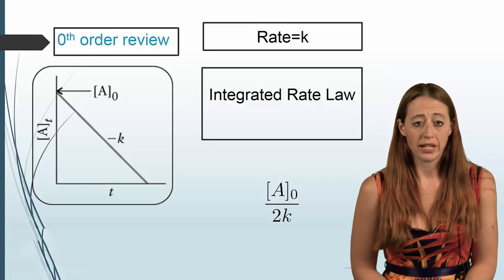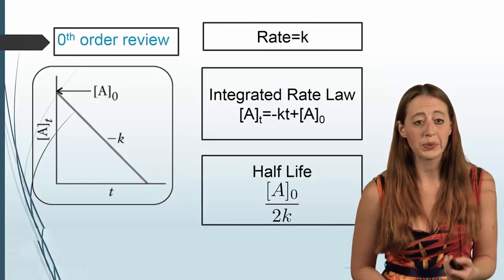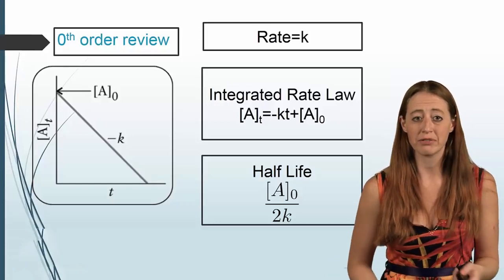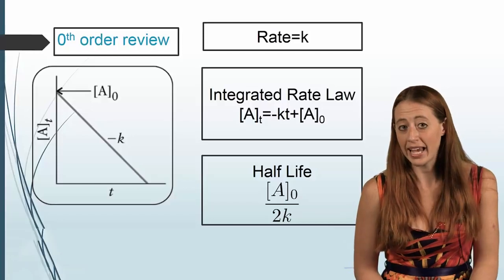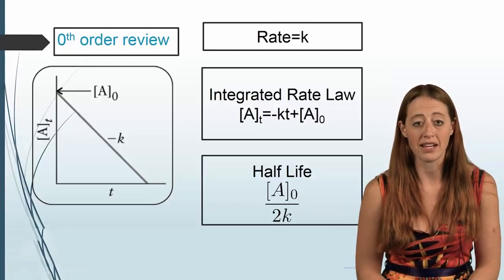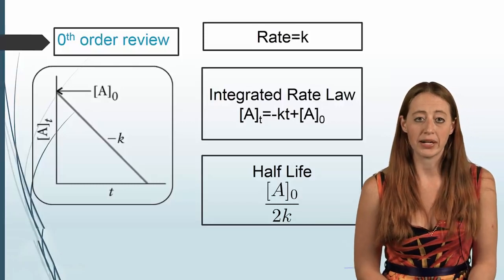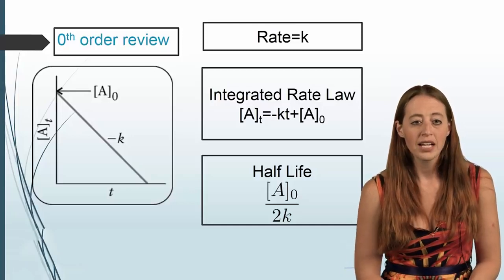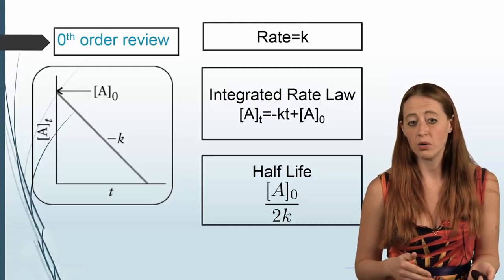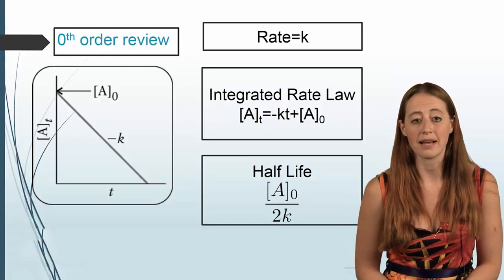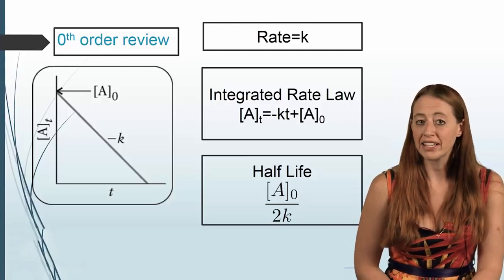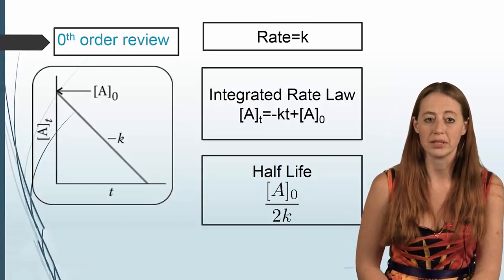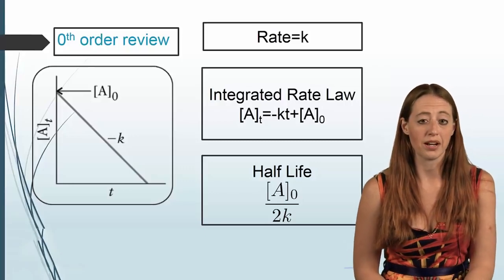Let's do a quick review of everything we have. We have three different forms of this equation. First, rate equals k — the rate law we've been discussing. Second, the integrated rate law, which is useful when we know two concentrations or a concentration at a time. Third, the half-life formula, which can be used to solve for k or to find the time until half the material disappears — used a lot in medicine and nuclear chemistry.